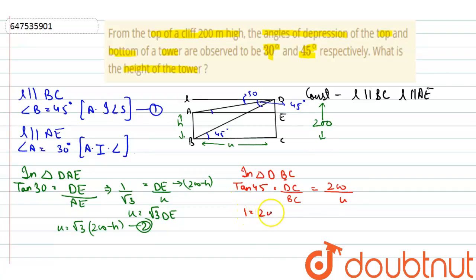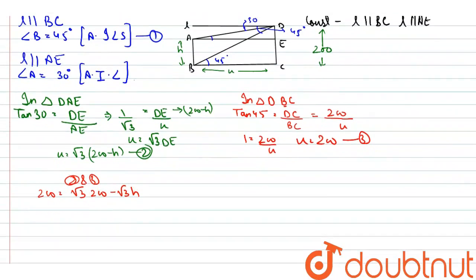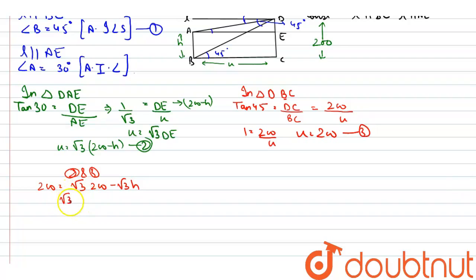It is equal to 200 upon X. So, we can say that X is equal to 200. This is equation third. So, from equation second and third, we can say that 200 is equal to root 3 times 200 minus root 3 H. So, root 3 H is equal to root 3 times 200 minus 200. Let's take 200 common. Root 3 minus 1 upon root 3 is equal to H.